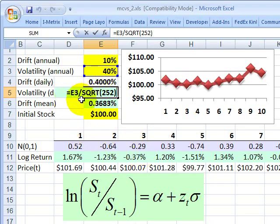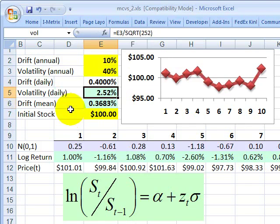And then I also did the same thing for the volatility, converted the annual volatility, 40% into a daily volatility. But remember, I don't divide by 252 there. I'm dividing by the square root of 252, the square root rule. Volatility scales with the square root of time because variance scales with time directly.